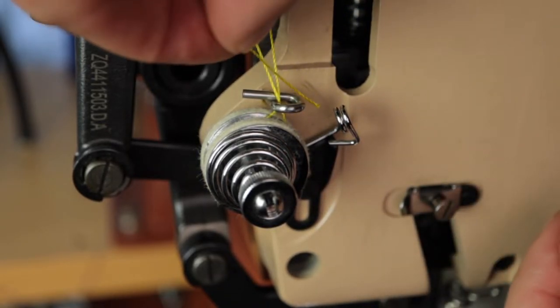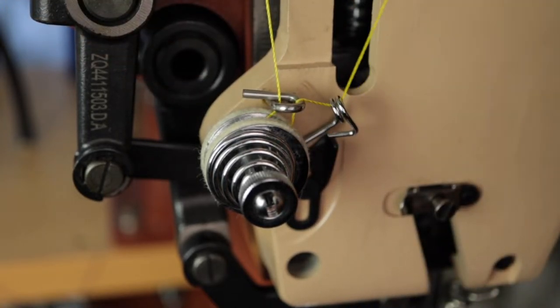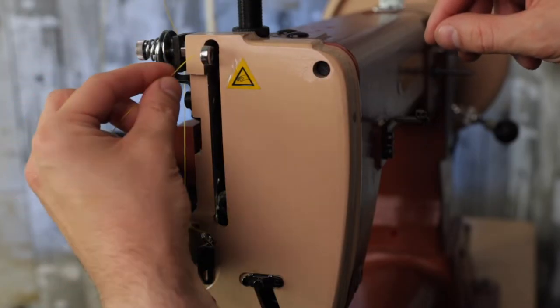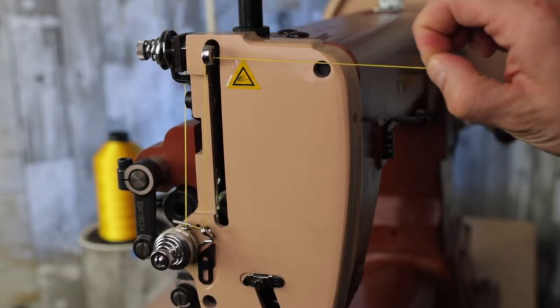Next is to go through the check spring and then up to the take-up lever. You want to thread from the back to the front of the take-up lever and then proceed back down.